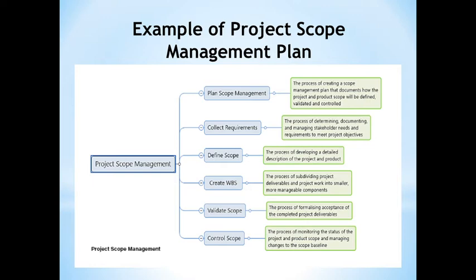Next is validate scope: the process of formalizing acceptance of completed project deliverables. We validate scope against the acceptance criteria defined between you and the customer for each deliverable that you are producing by the end of each phase in a project life cycle. It is important to define the acceptance criteria very clearly.